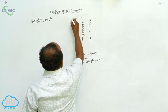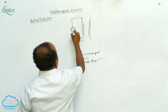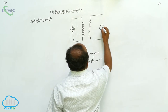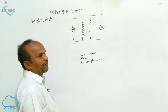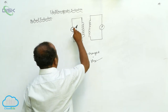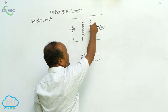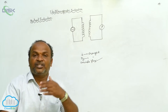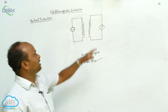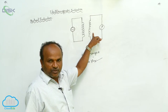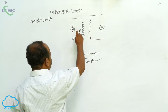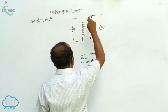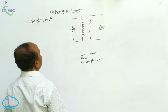The first coil is connected to the AC current, and the second coil is connected to the galvanometer. I am changing the current in the first coil, and there is a production of current in the second coil. In the second coil there is no connection of battery or AC source. As I change the current in the first coil, there is an induced EMF in the second coil. Such a phenomenon is called mutual induction.